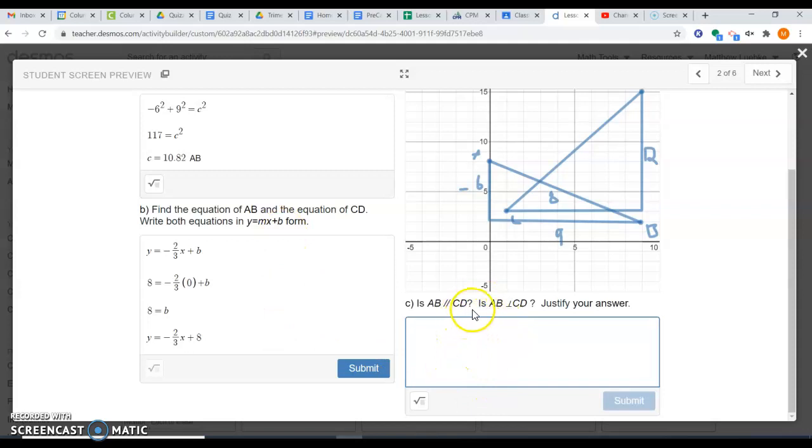Once you have the second equation, you can answer part C about whether these lines are parallel or perpendicular. Remember, if lines are parallel, the slopes are the same. When you find your second equation, you can look at the slopes. This one had a slope of negative two-thirds. If the new line has the same slope, then they are parallel. If the lines are opposite reciprocals, then they are perpendicular. Opposite reciprocal means one is positive, one is negative, and the numbers have been flipped. For example, three over four, the opposite reciprocal would be negative four over three. One is positive, one is negative, and the numbers have been flipped. If you see this relationship, you're allowed to say that they are perpendicular.